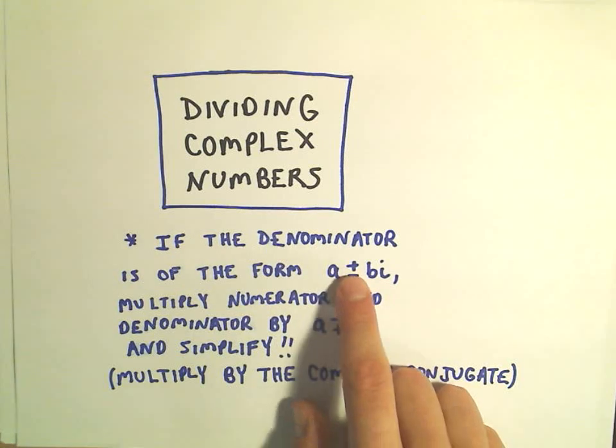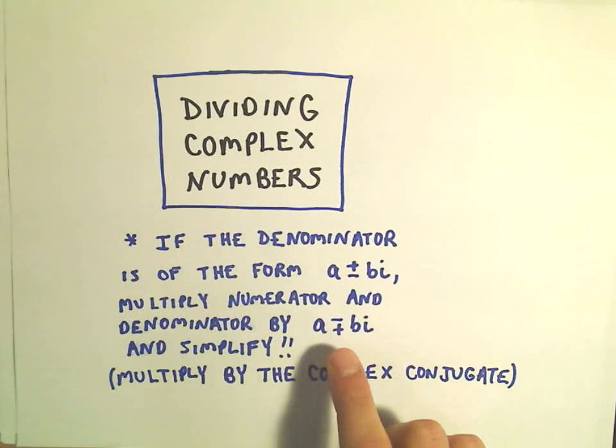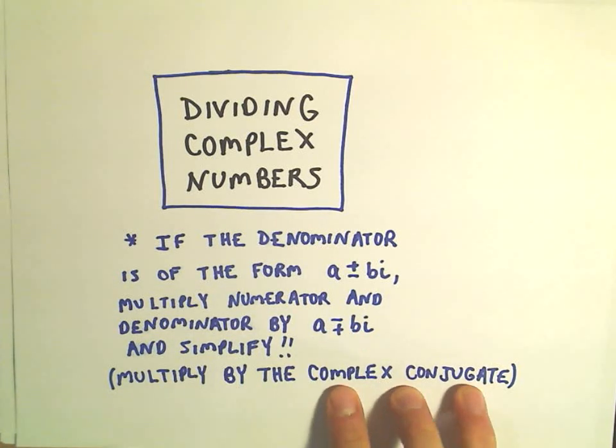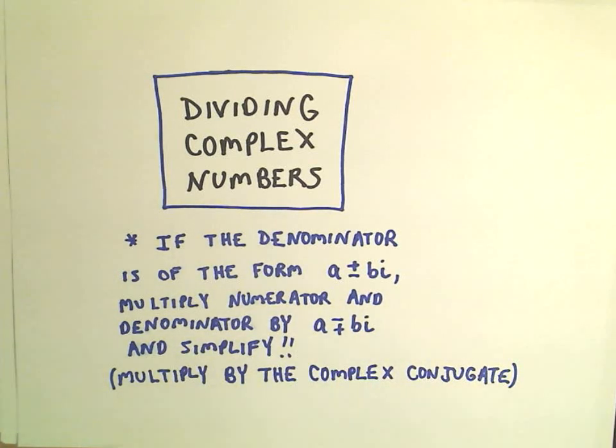So all a conjugate is, if you have a plus bi, the complex conjugate or the conjugate of that would be a minus bi. We call it a complex conjugate just because we're using complex numbers.